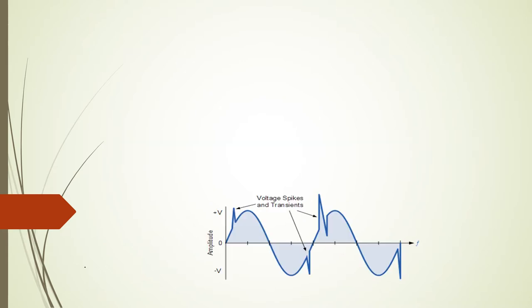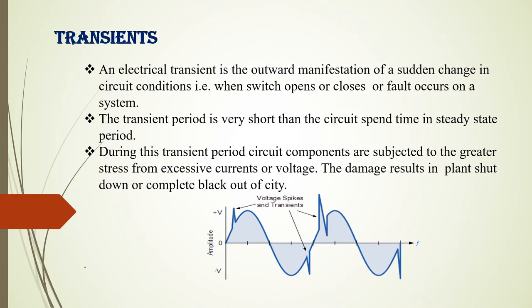Today we are going to cover the first topic: transients. What is a transient? A transient is an outward manifestation of a sudden change in circuit condition. Whenever a switch operates in the power system — whether you are opening or closing a circuit breaker, or a fault occurs — a sudden disturbance takes place in the entire power system. This period is called the transient period, and it will be very short. If you do not give importance to transients, it can lead to the entire collapse of the electrical network.